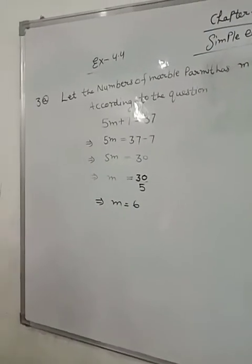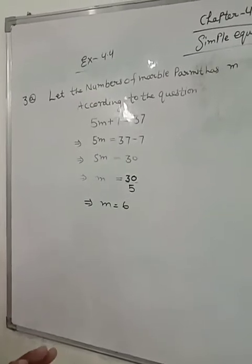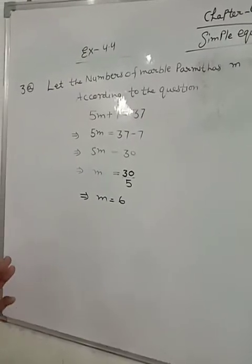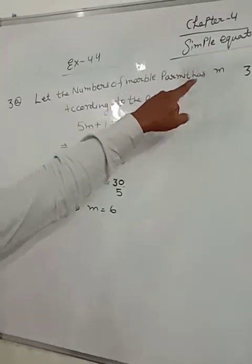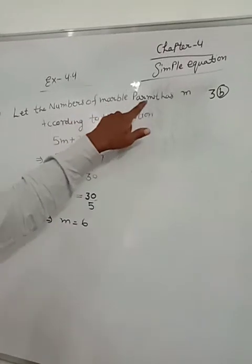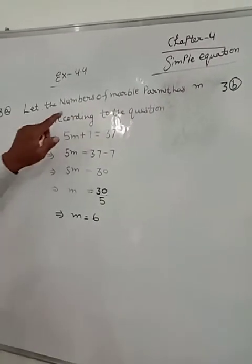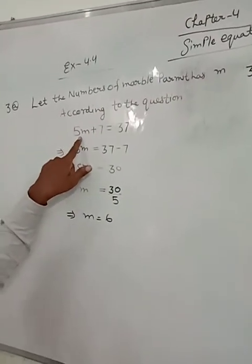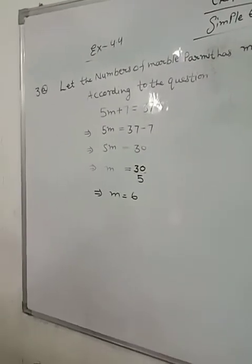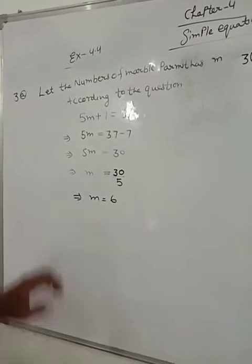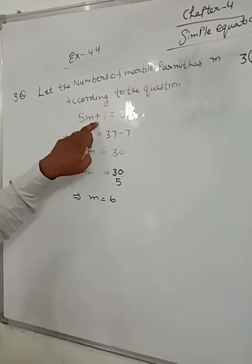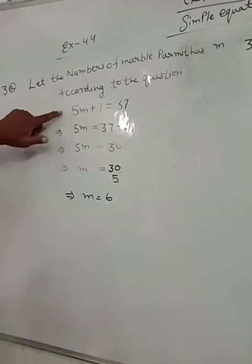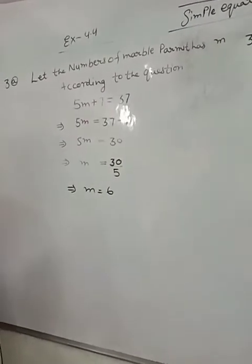Irfan says that he has seven marbles more than five times the marbles Parmit has. Irfan has 37 marbles. The number of marbles Parmit has is M. According to the question, five times the marbles Parmit has plus seven equals the marbles Irfan has. So 5M plus 7 is equal to 37.